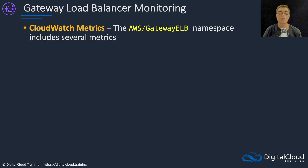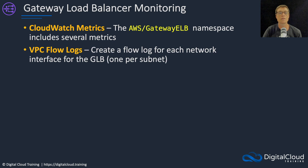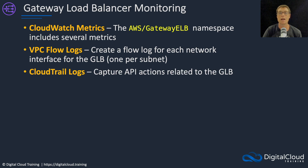We'll cover a few things about monitoring your gateway load balancer. There are CloudWatch metrics, and the AWS gateway ELB namespace includes quite a few metrics. You can also use VPC flow logs — you can create a flow log for each network interface for the GLB, one per subnet, and that will capture the traffic, which you can store in an S3 bucket for analytics. And lastly, CloudTrail logs will capture the API actions relating to your GLB.